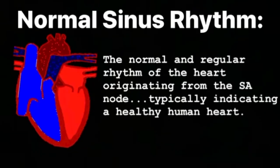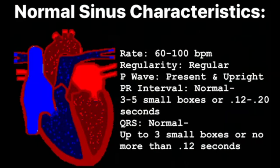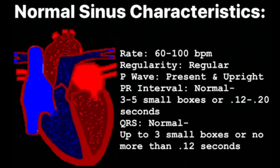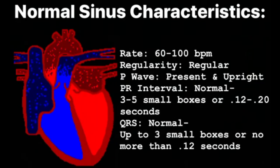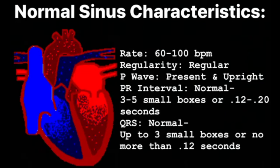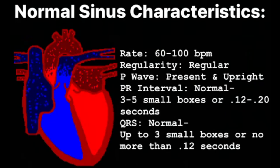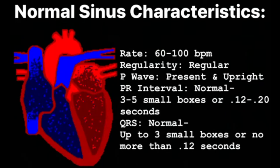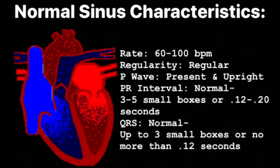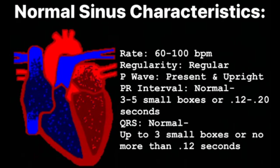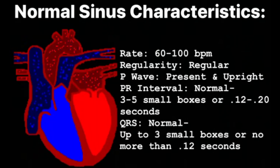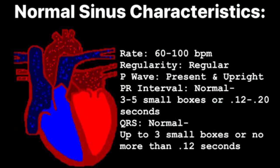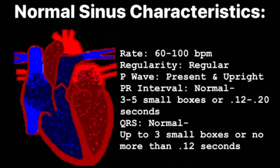Let's look at some of the characteristics of normal sinus. The rate is going to be 60 to 100 beats per minute. Any deviation — anything more or anything less — will not constitute as normal. It will be a regular rhythm, meaning that your P waves are going to march out and your QRS complexes will march out. P waves will be present and upright. The normal PR interval is 3 to 5 small boxes or 0.12 to 0.20 seconds, and your QRS is up to 3 small boxes or no more than 0.12 seconds.